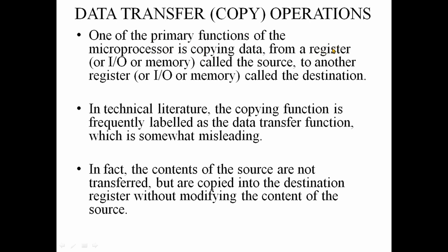Data can be in a register, an IO device, or memory — this is called source data. We copy that data to another register, IO, or memory location — that is called the destination. Using the data transfer operation, you move from the source to the destination.